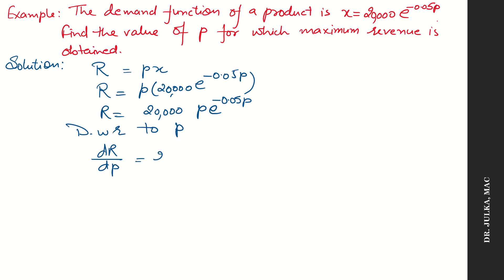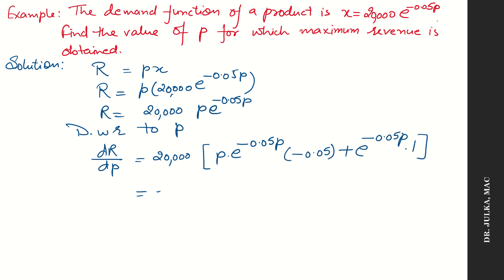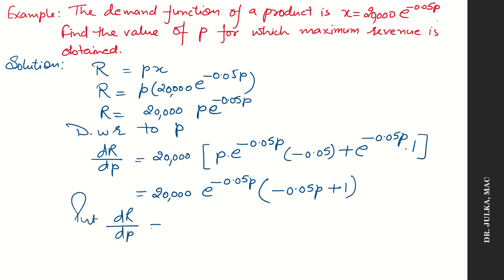The derivative of revenue with respect to p: taking 20,000 common, we get p as it is times the derivative of e raised to the power minus 0.05p into minus 0.05, plus e raised to the power minus 0.05p as it is, and the derivative of p is 1. Now take e raised to the power minus 0.05p common, and we get 20,000 into e raised to the power minus 0.05p into (minus 0.05p plus 1).